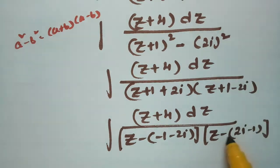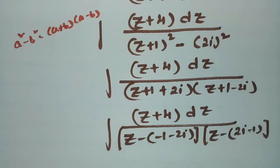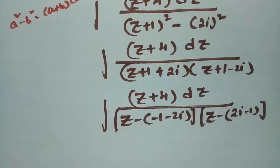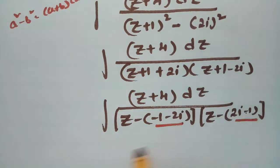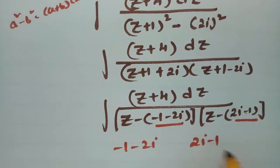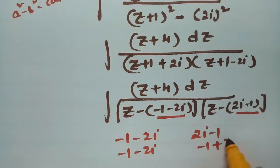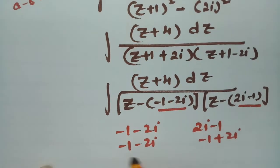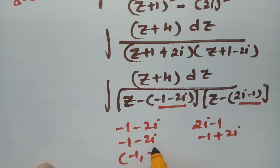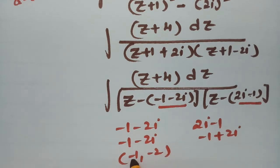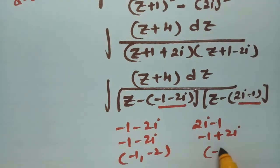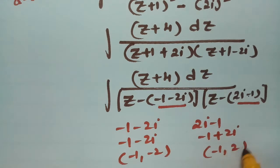The two singular points are z = −1−2i and z = 2i−1, which can be written as −1+2i. In terms of coordinates, −1−2i corresponds to x = −1, y = −2, and −1+2i corresponds to x = −1, y = 2. Let us check whether these two points lie within the given circle.